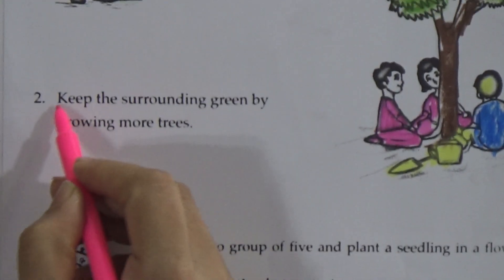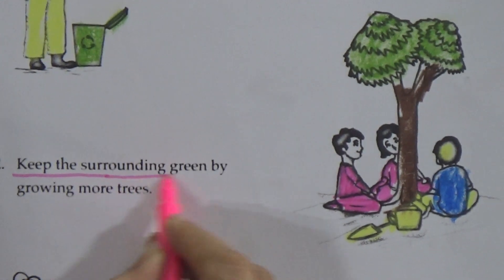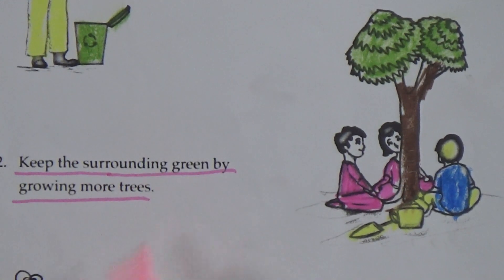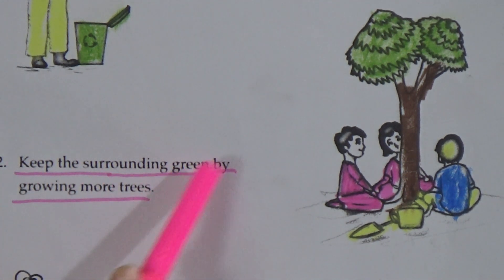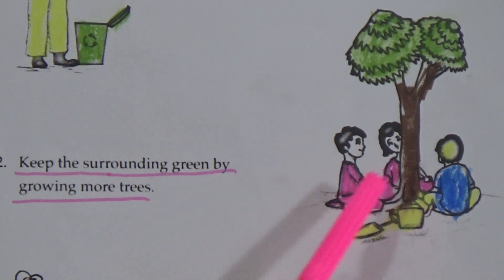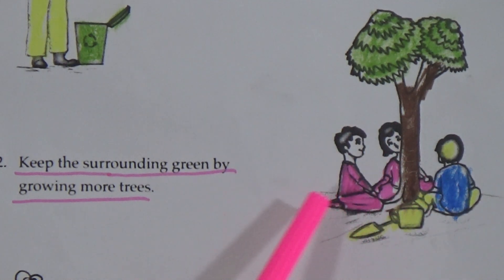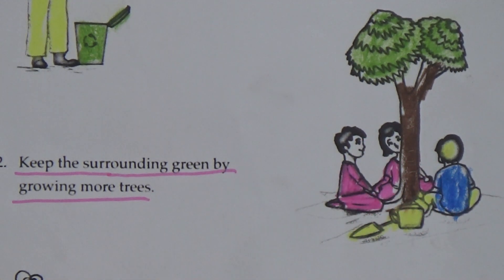Number two: keep the surrounding green by growing more trees. Dear students, highlight this line and memorize it. See this figure — we have to plant more trees to keep our surrounding green.